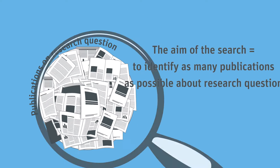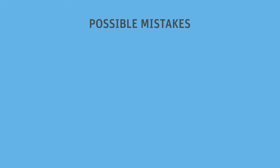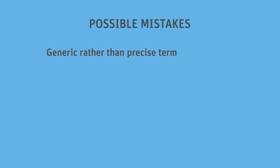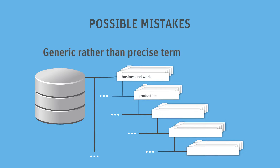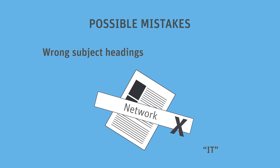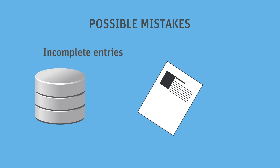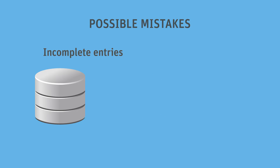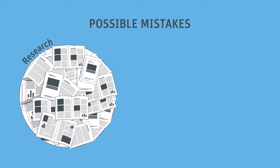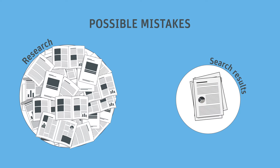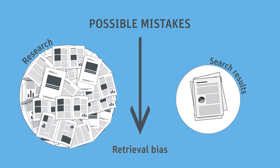Unfortunately, database hosts sometimes make mistakes. For example, entries may be listed under the wrong publication type, or assigned a generic rather than a more precise term, or given the wrong subject headings. Occasionally, entries are incomplete. If not all publications on a subject can be found in a database because of such mistakes, this is referred to as a so-called retrieval bias.